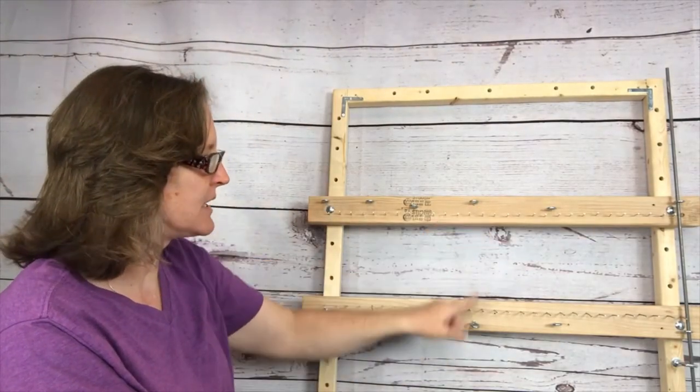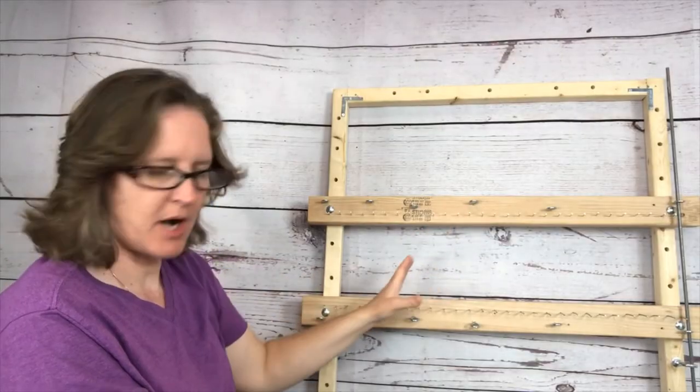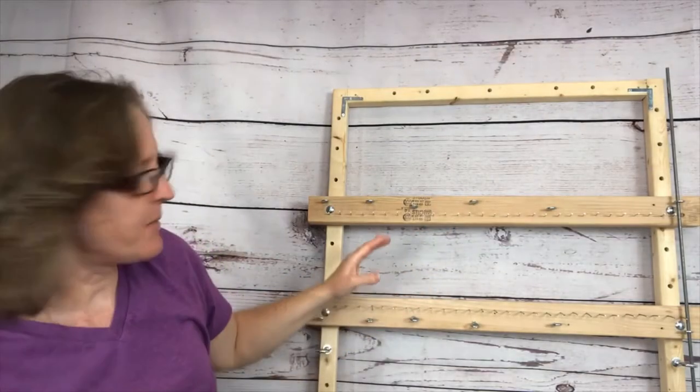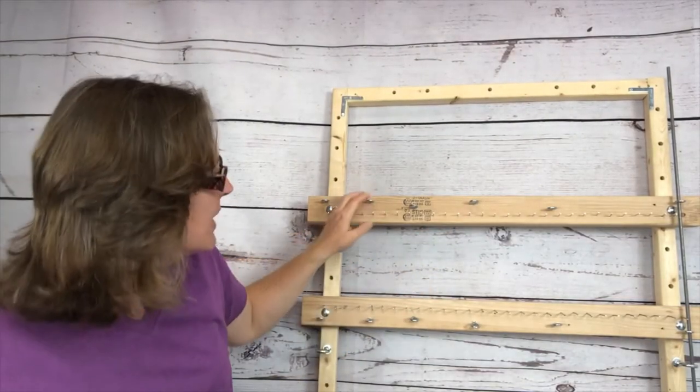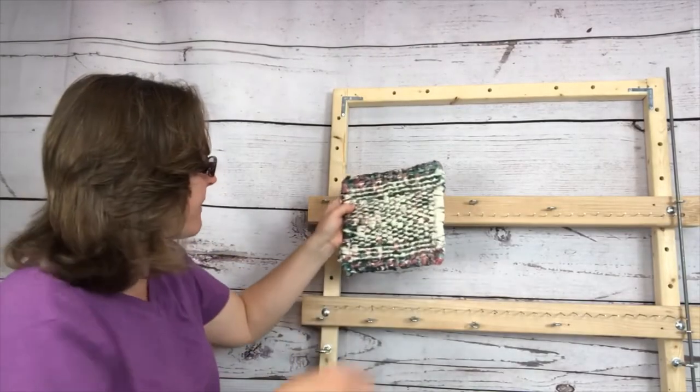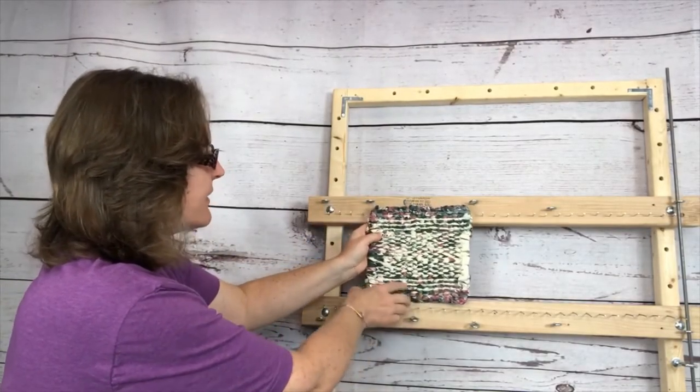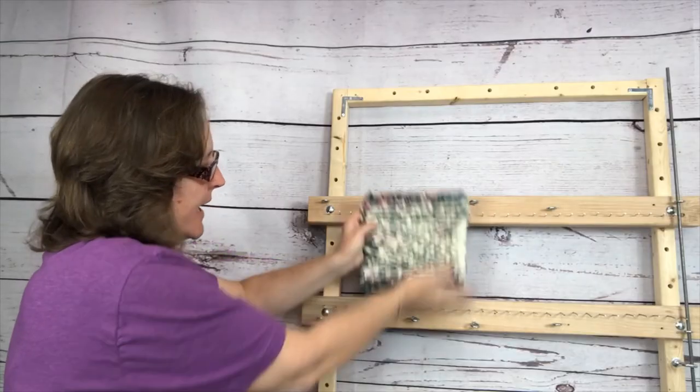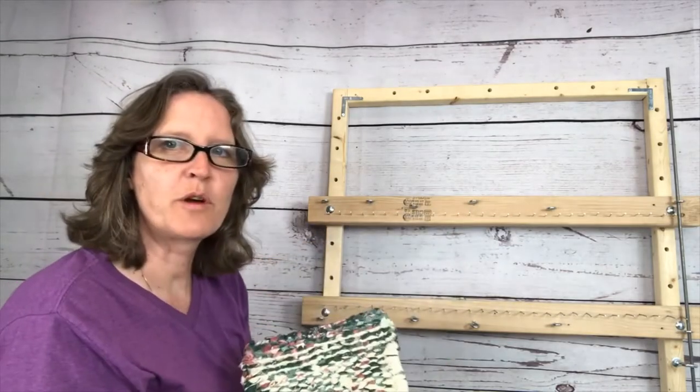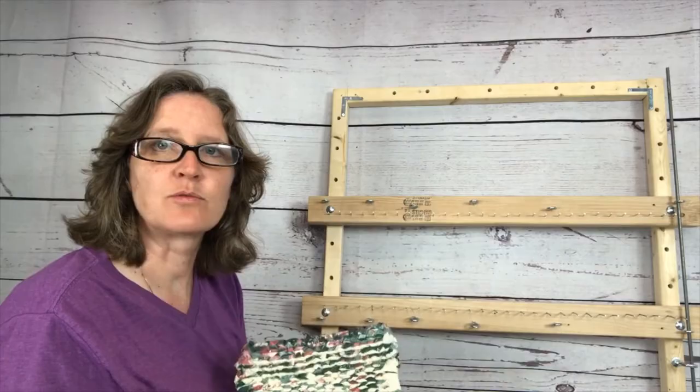You can see that I have hooks here because I made smaller projects. For instance I made a project that was very small like a hot pad that was this size so I just used the nails from here to here and I had my bars really close together in order to make this project, but this could make a nice size rug.